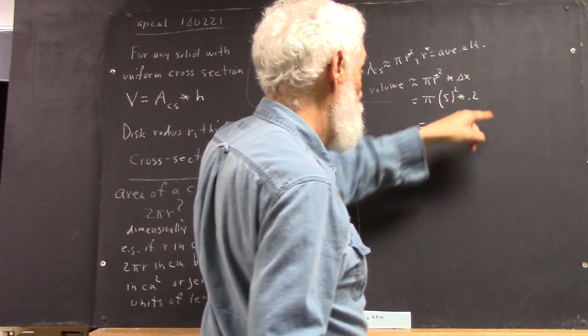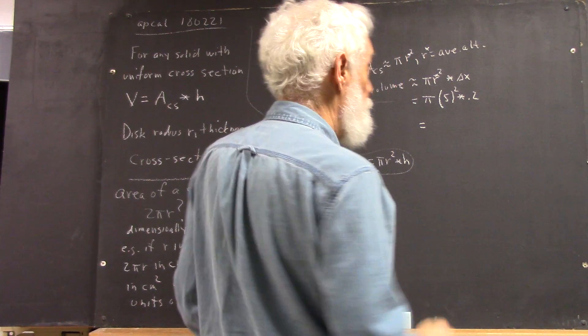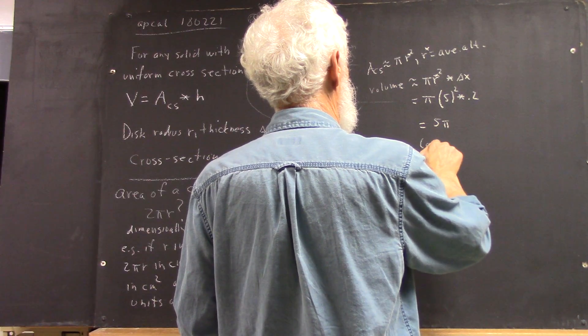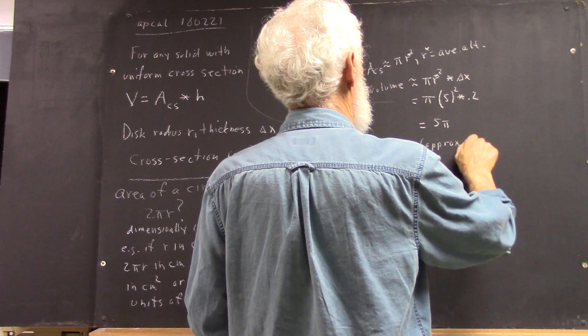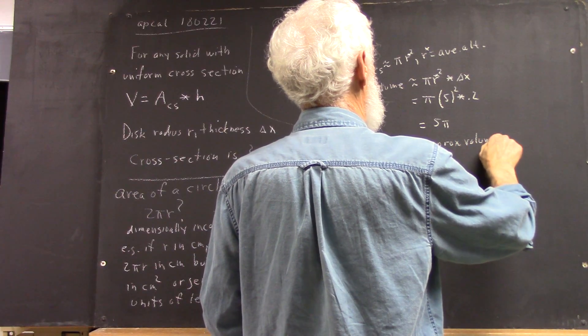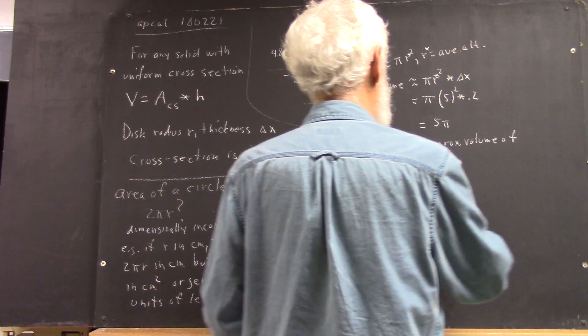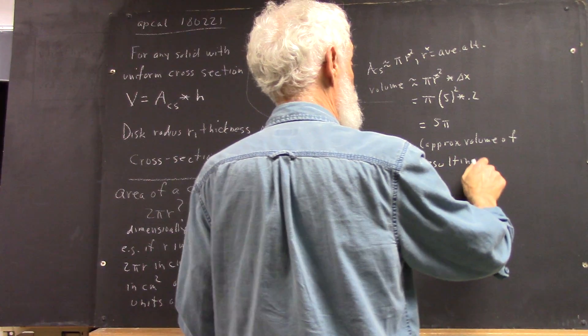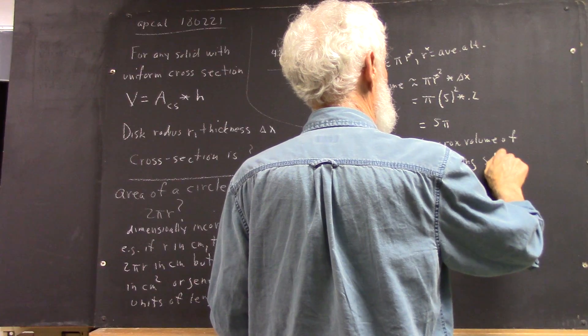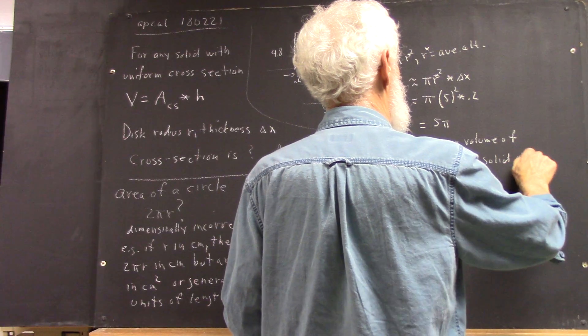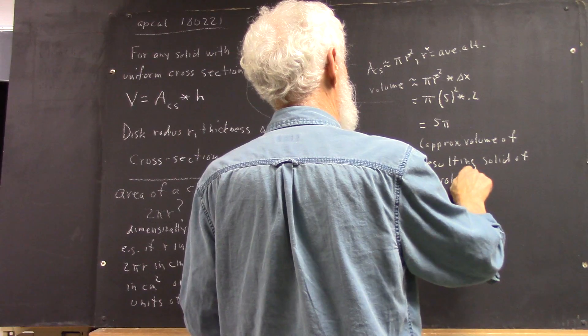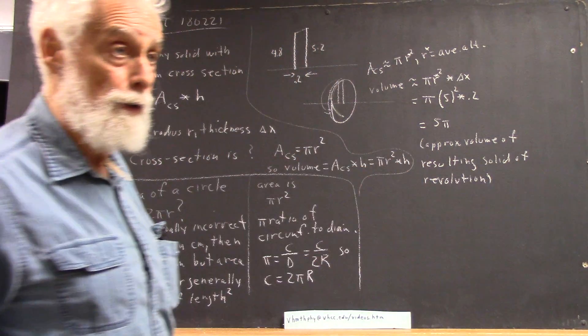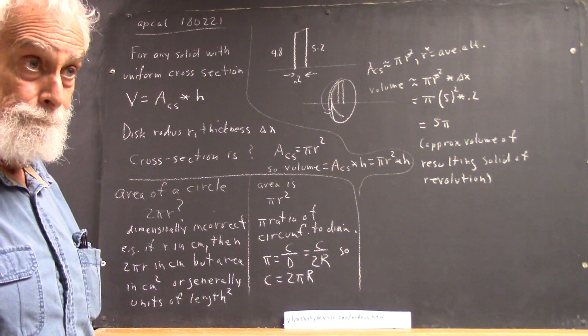And the thing that we got when we did this is a solid of revolution. So, I'm going to say, this is the approximate volume of the resulting solid of revolution.